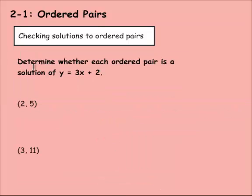For this first part, we have to determine whether each ordered pair that's listed here is a solution of y equals 3x plus 2. So we need to replace this 2, which is the x, with this x here, and then this 5, which is the y, with this y here. If we're going to rewrite this problem, it would be 5 equals 3 times 2 plus 2.